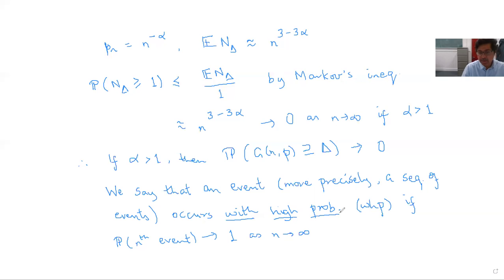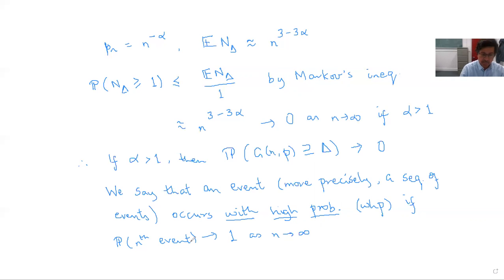Different people use slightly different terminology here. What we call 'with high probability' is also called 'asymptotically almost surely.' In theoretical computer science, the phrase 'with high probability' is sometimes used only if the probability of the complement decays to zero fast enough, like n^{-c} for some fractional power. But we are going to use it to mean that the probability of the complement decays to zero — however slowly — and the probability of the event itself increases to 1.